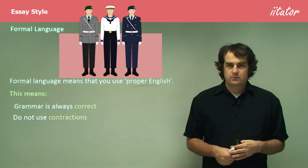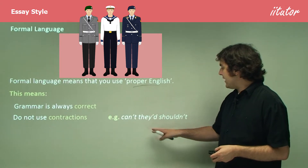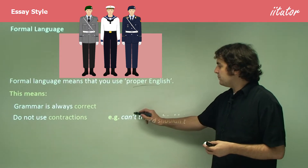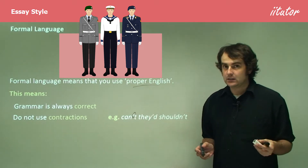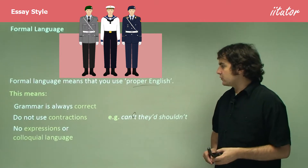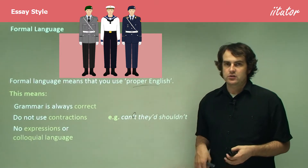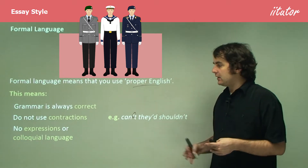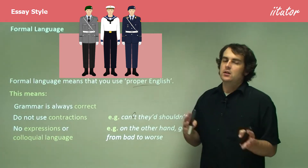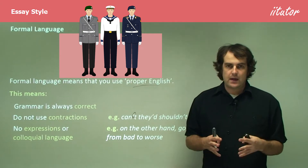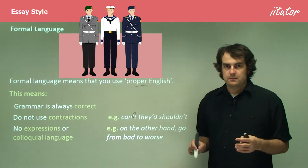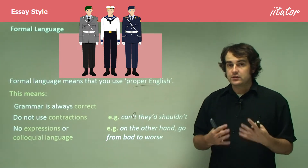You do not use contractions — things like can't, they'd, or shouldn't. Anything where you've got an apostrophe cutting out a letter, you remove that. That's another rule of formal language. The final rule is no expressions or colloquial language — no phrases that you may hear just in conversation, for instance 'on the other hand' or 'it goes from bad to worse.' The reason why you can't use those sorts of expressions is because they don't mean the same thing to everyone.